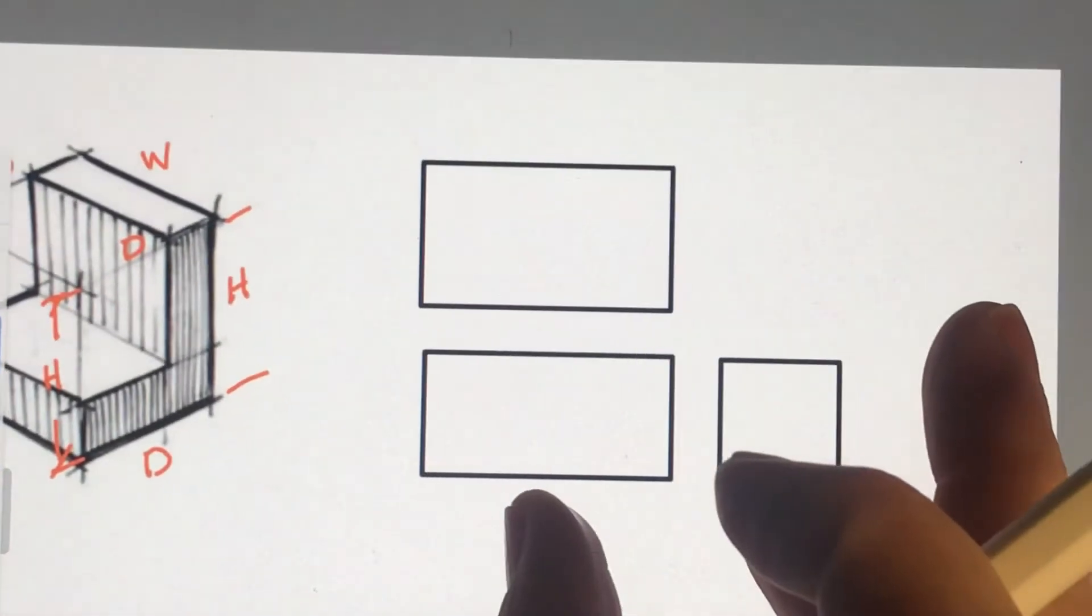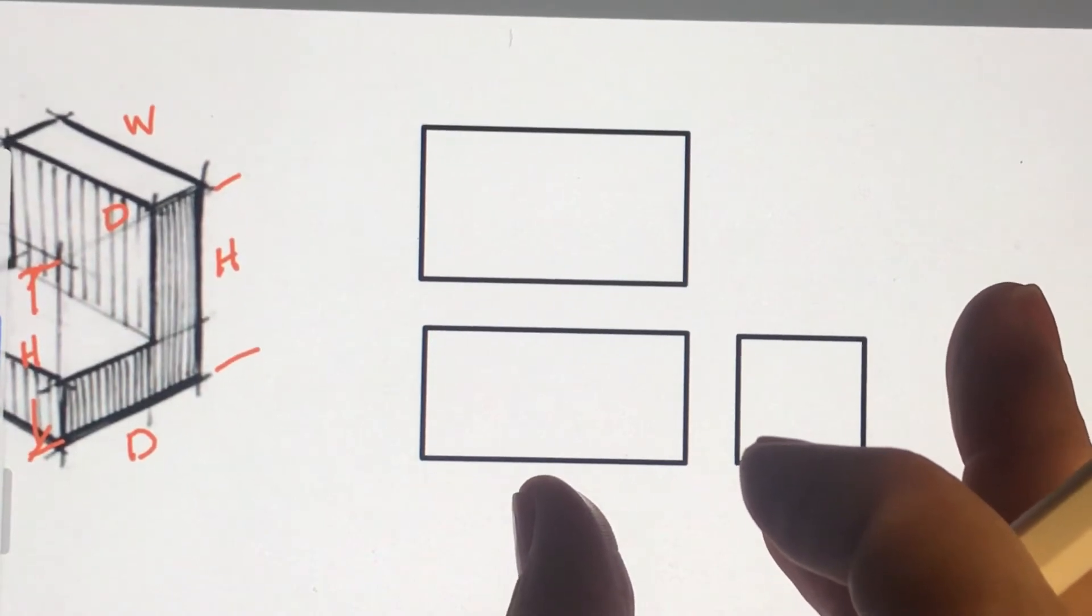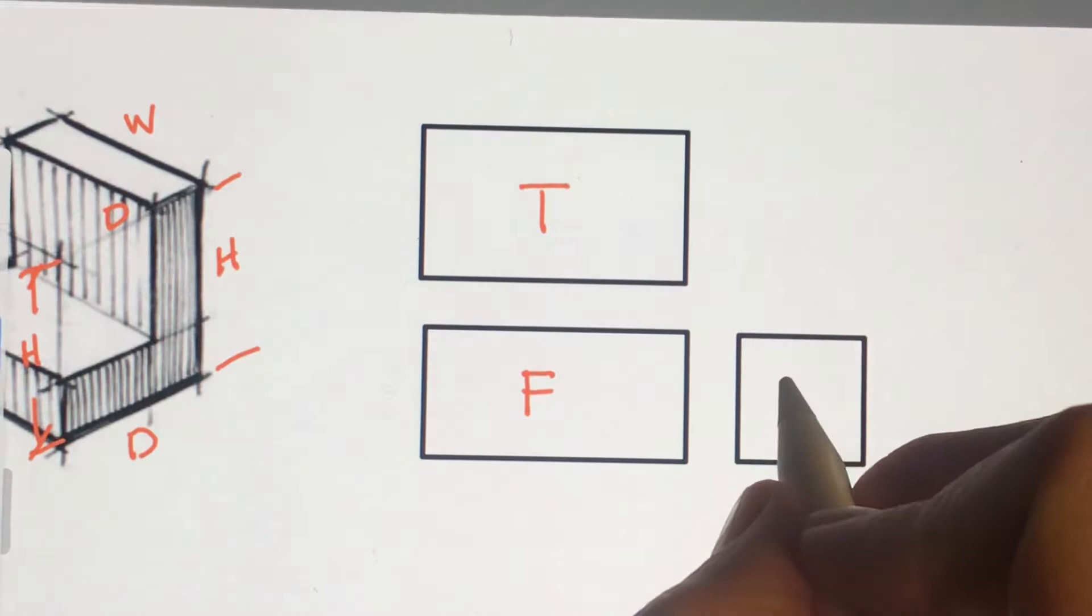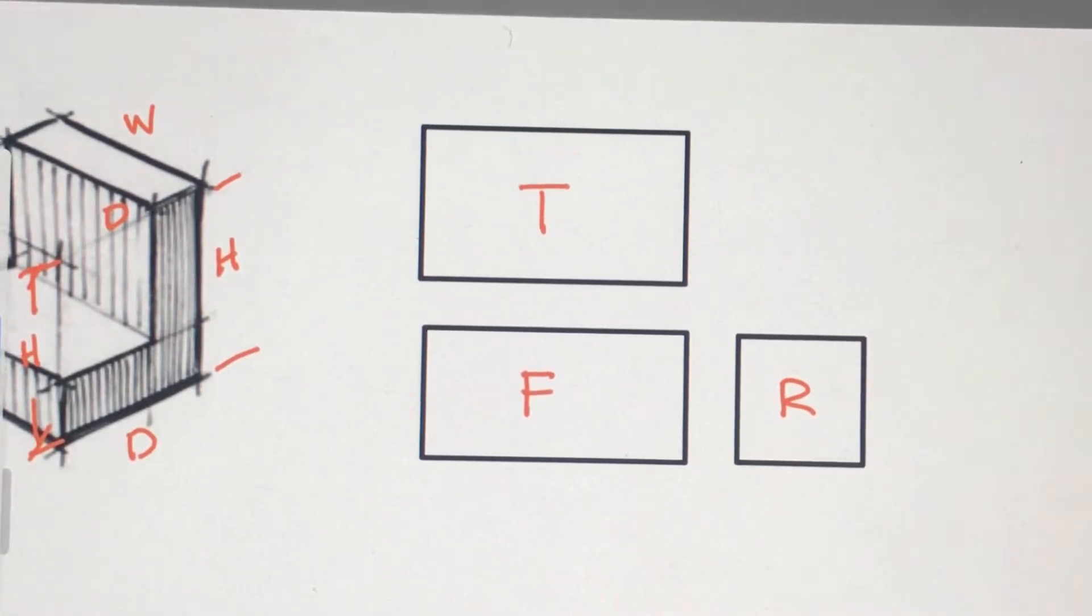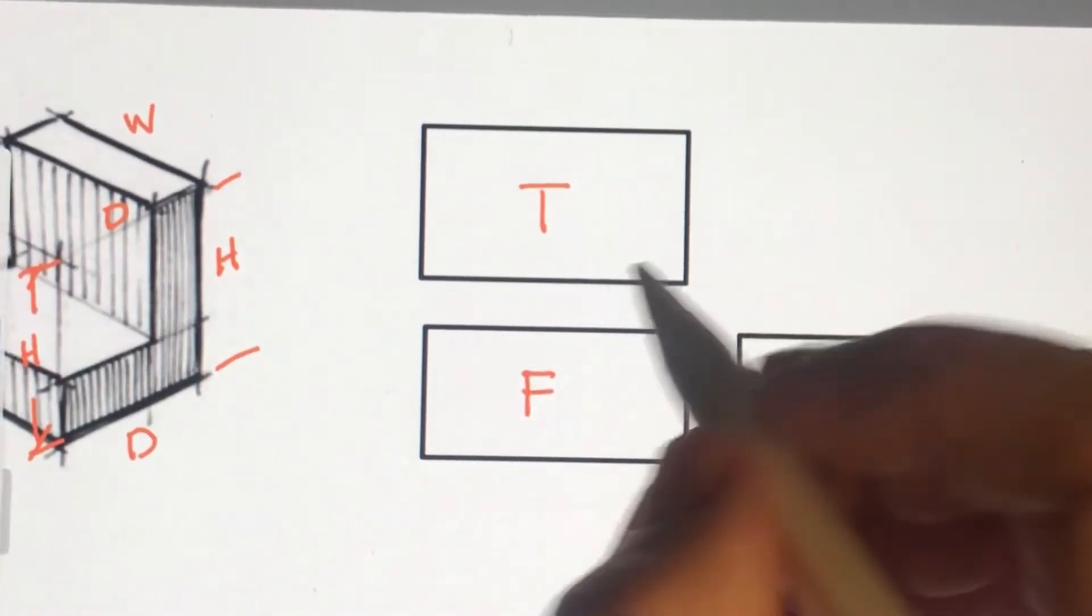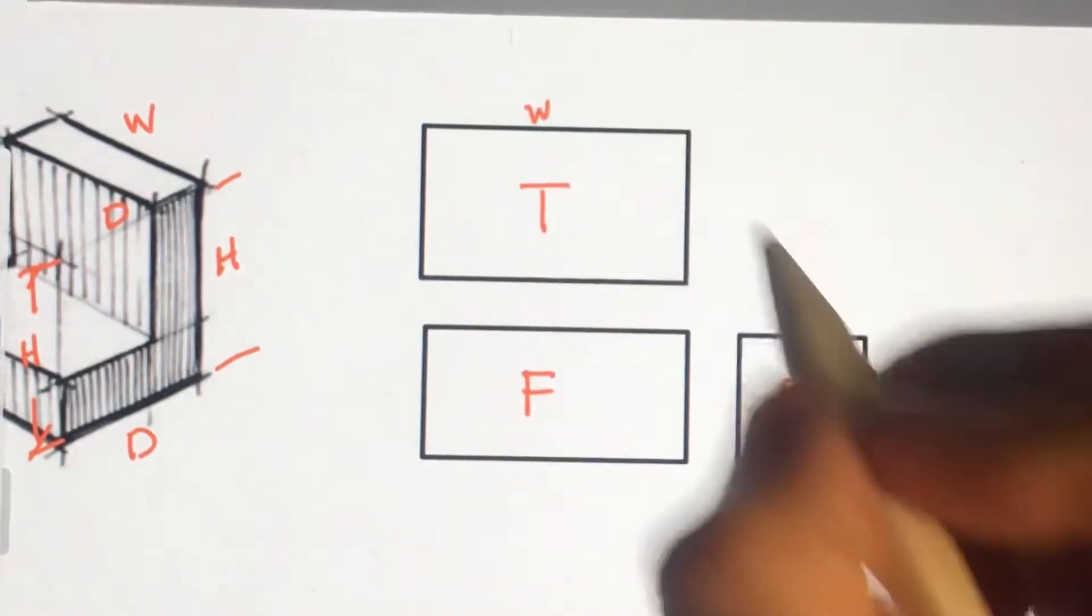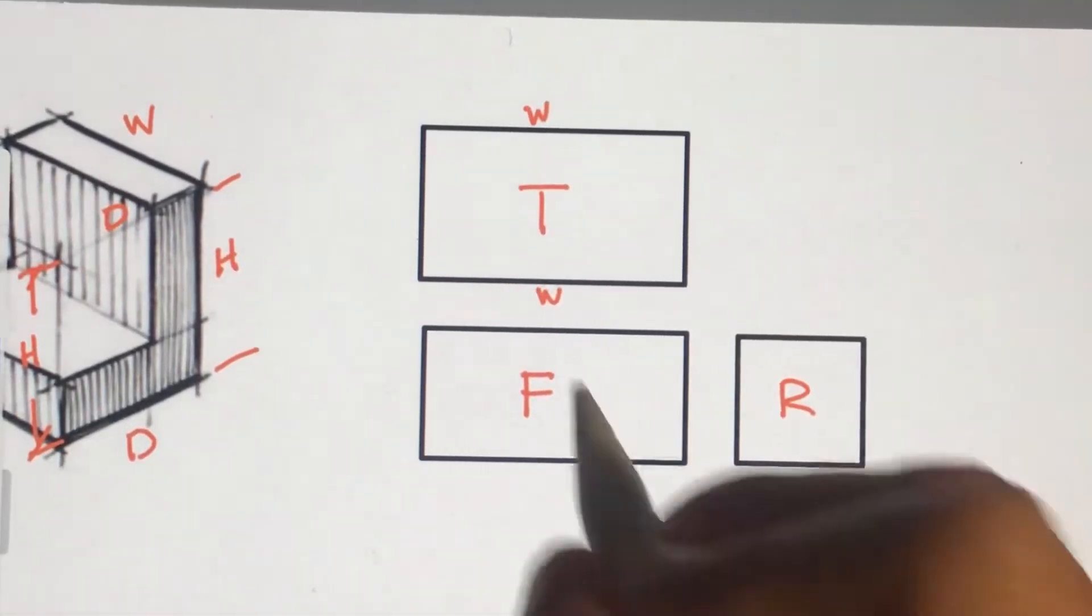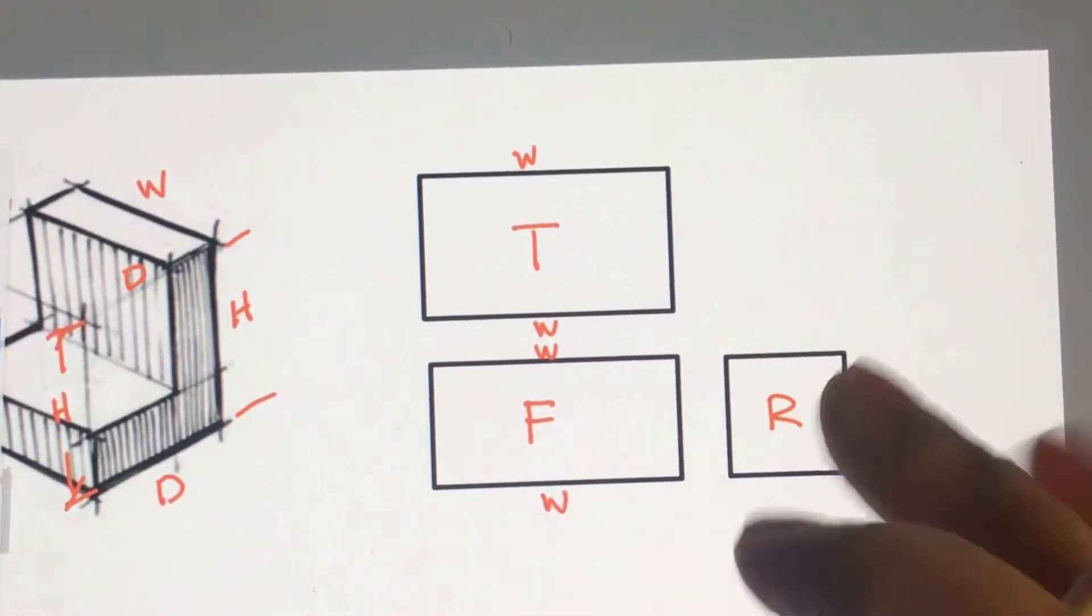Now, if you're given the actual views of the part, this is your top, your front, and your right side. So the top view can show me the width here and here. The front view can show me the width.